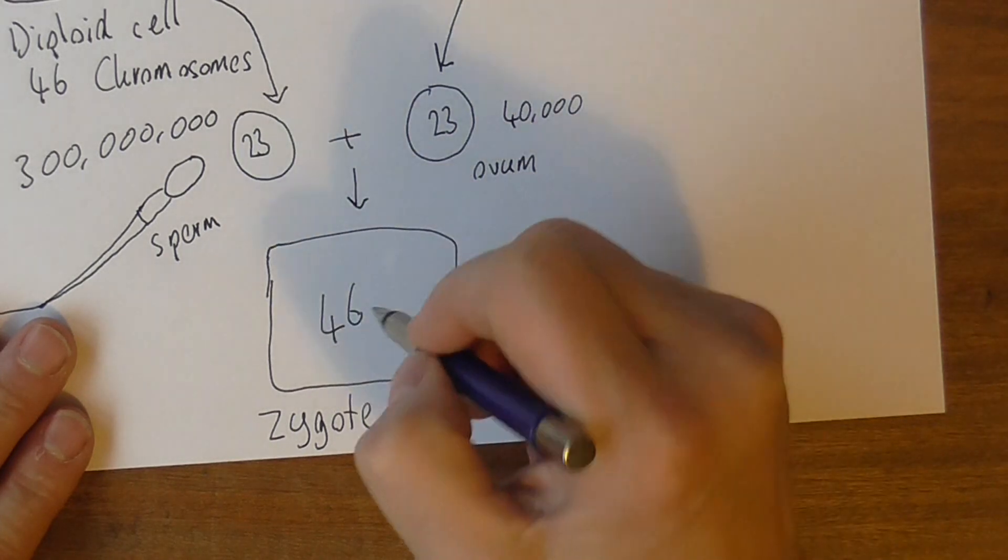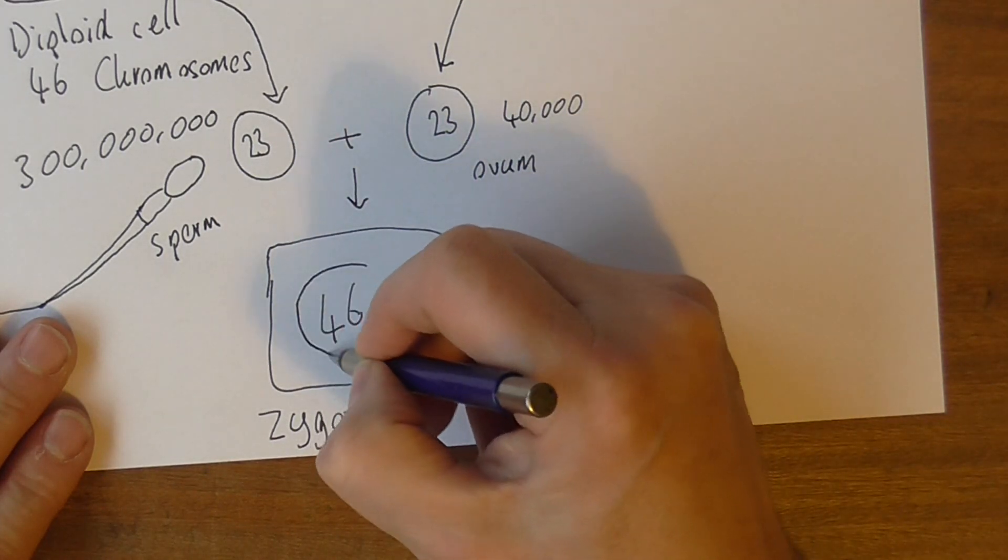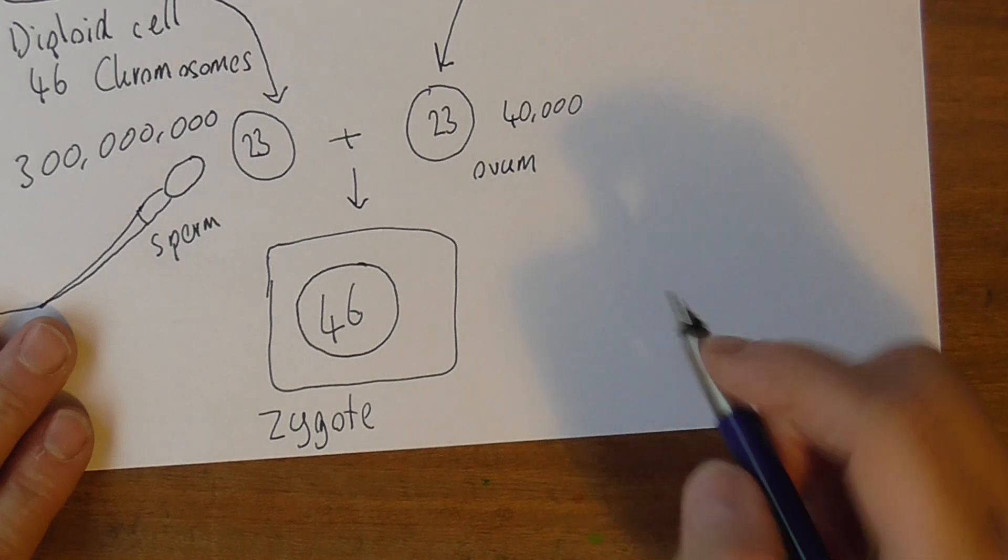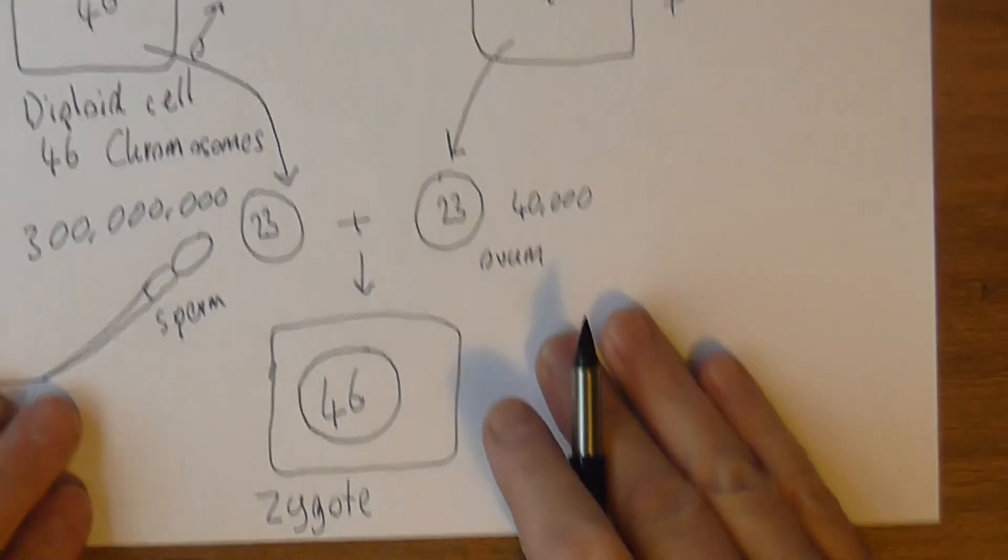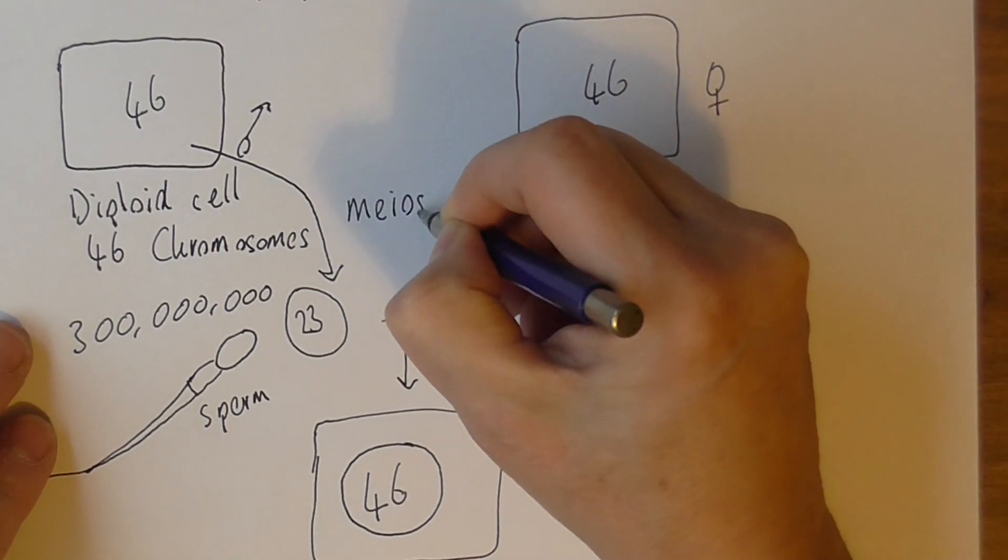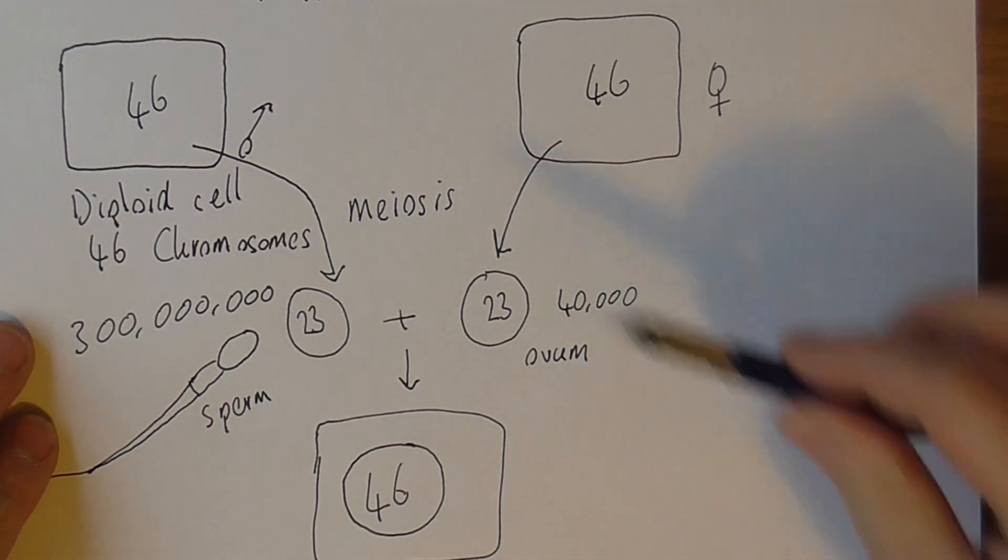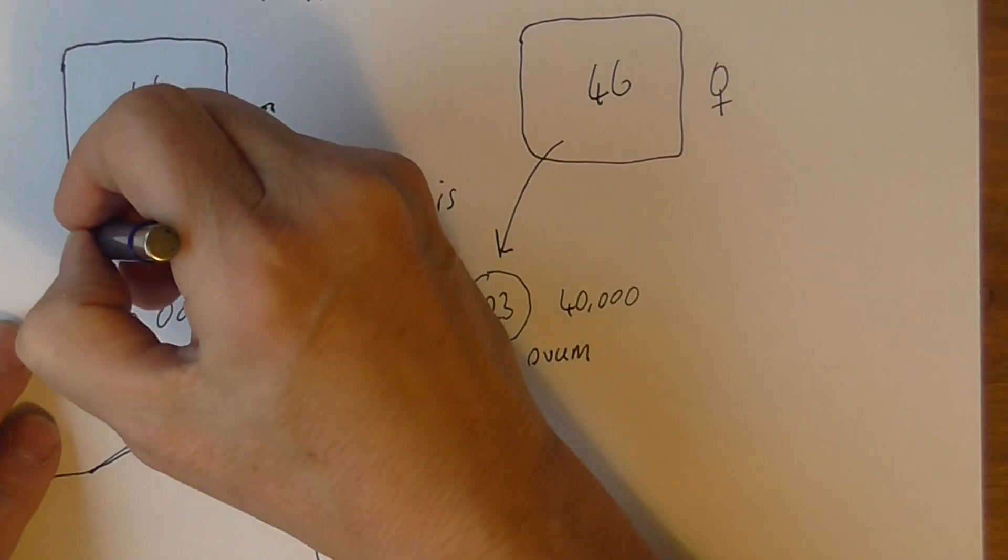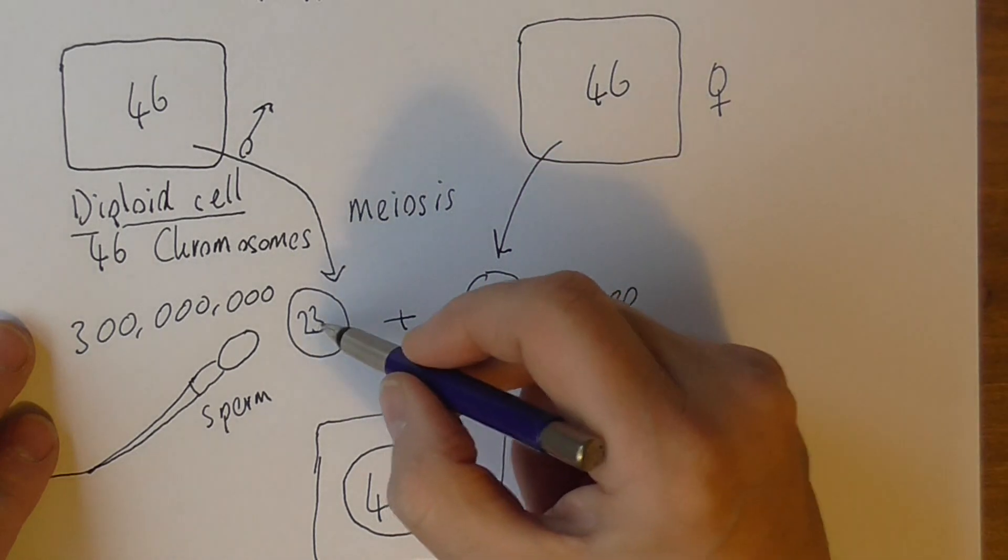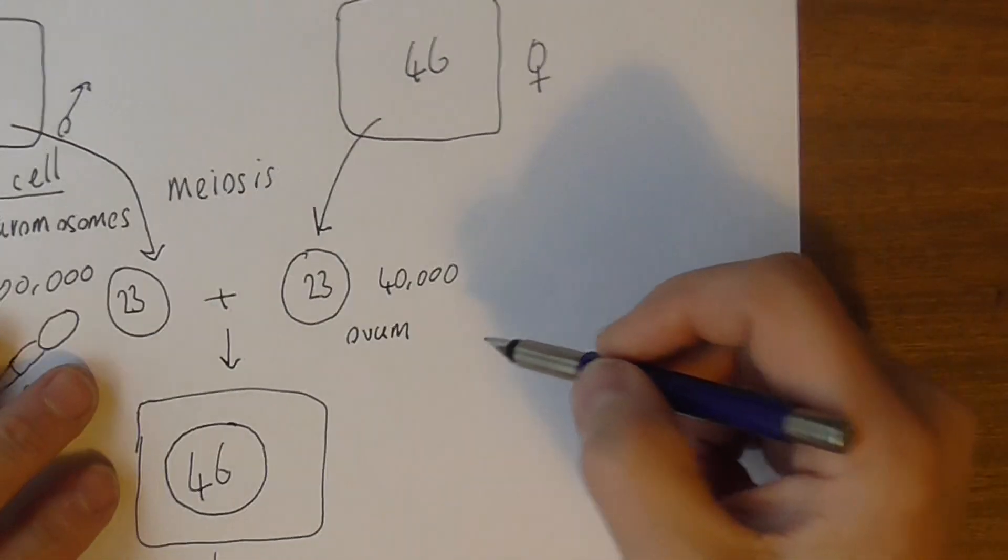At one time we were all a cell containing 46 chromosomes - that's how we all began - and that's achieved through this process, meiosis, where the diploid cell containing 46 chromosomes is reduced to a cell with 23 chromosomes, the haploid cell.